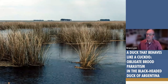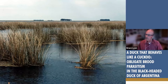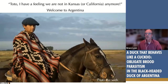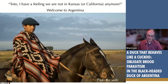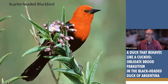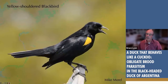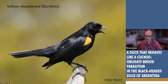But this marsh actually wasn't in California — it's a marsh in Argentina. There are a lot of birds that are very similar. We're not in Kansas or California anymore. Instead of a yellow-headed blackbird, we have a scarlet-headed blackbird, and instead of a red-winged blackbird, we have a yellow-shouldered blackbird. It's very similar, but a little bit topsy-turvy.